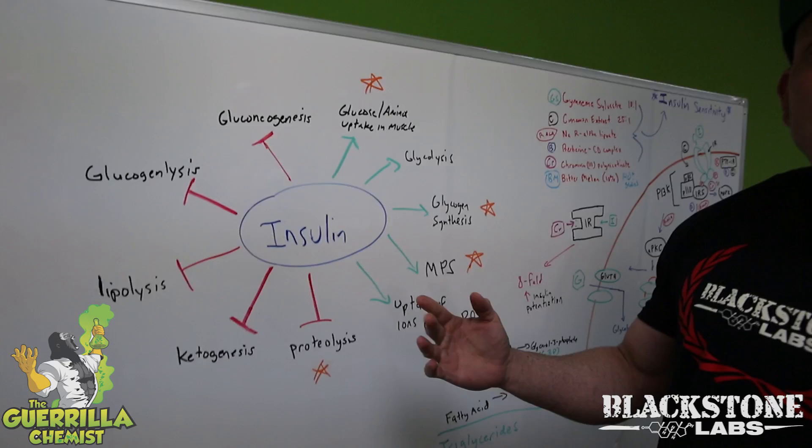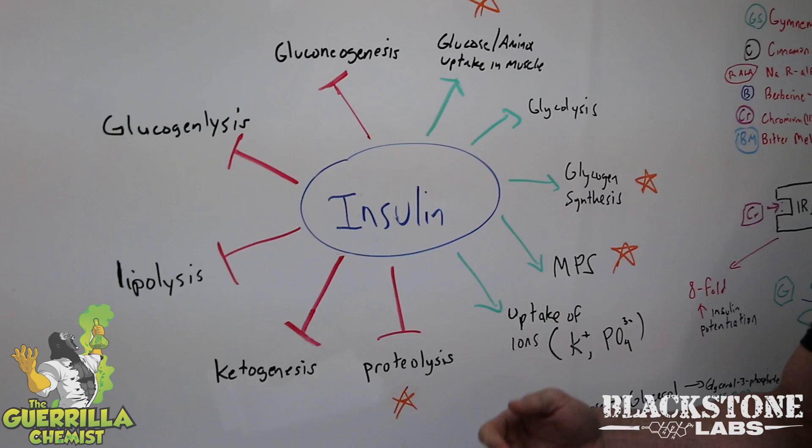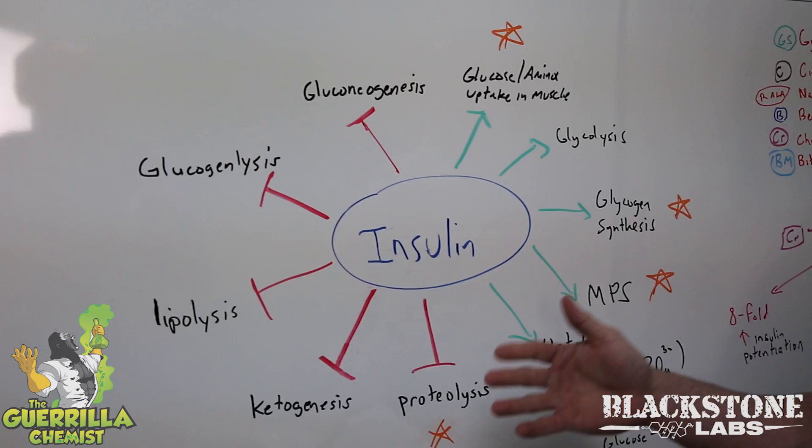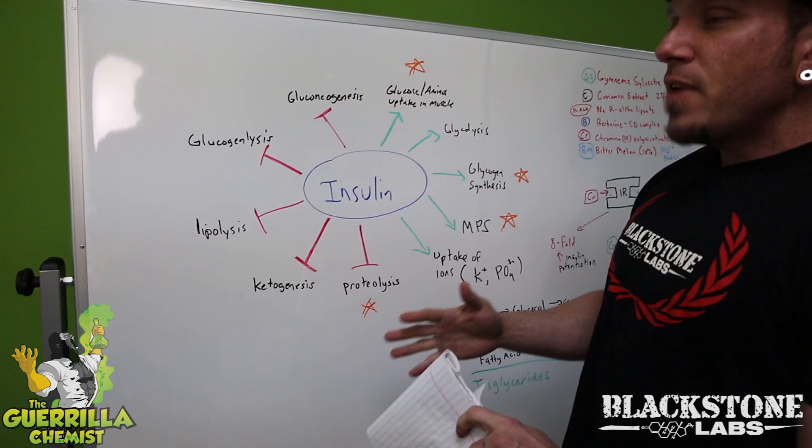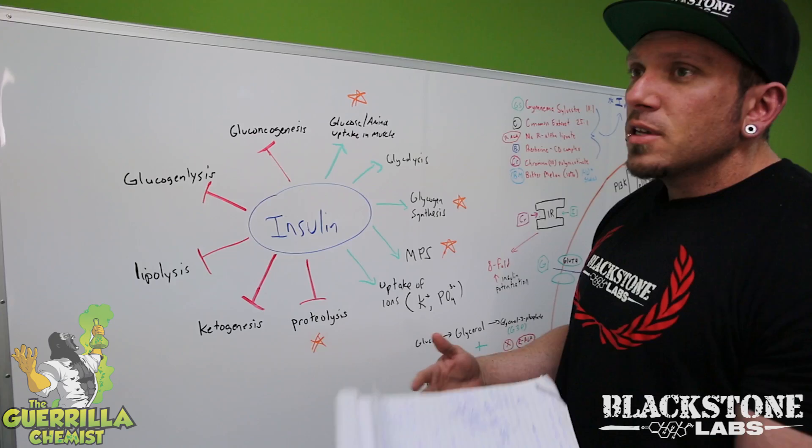Insulin is responsible for bodybuilders competing at 280, 290, 300 pounds — they all abuse insulin. It can also be your worst enemy because insulin is a storage hormone, meaning it can store fat or it can store carbohydrates and amino acids. Depending on diet, timing, and other factors, it determines whether your body is going to be storing fat or storing muscle tissue as glycogen and amino acids.